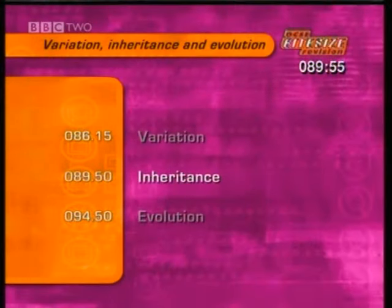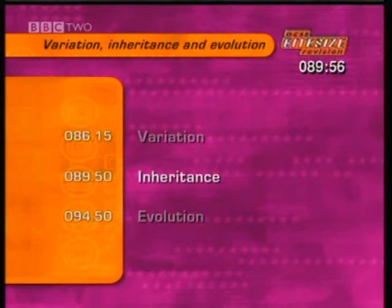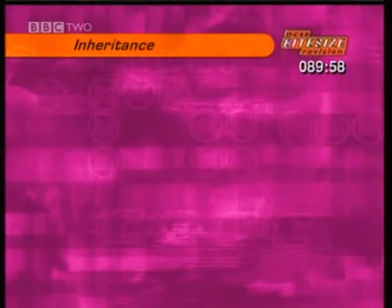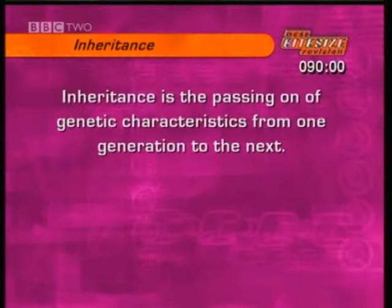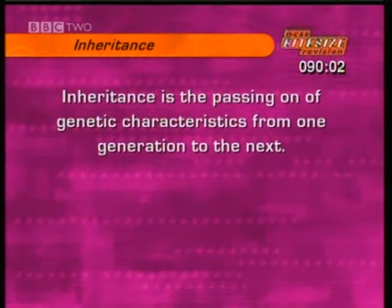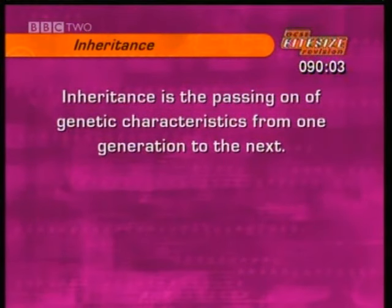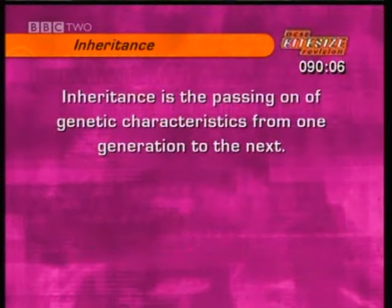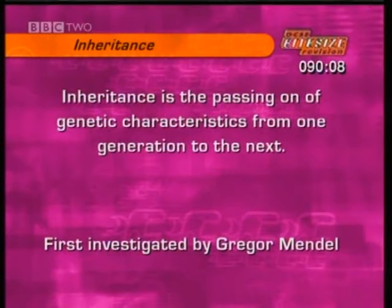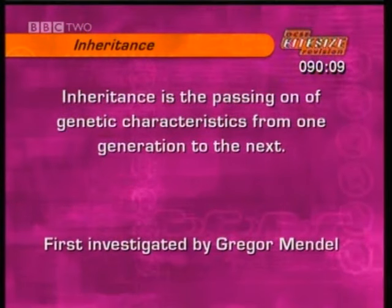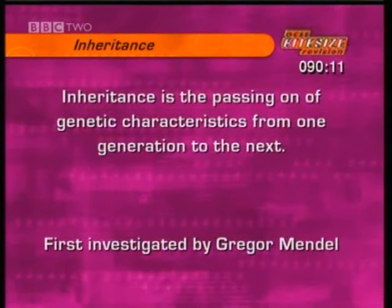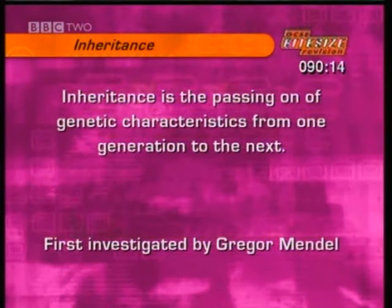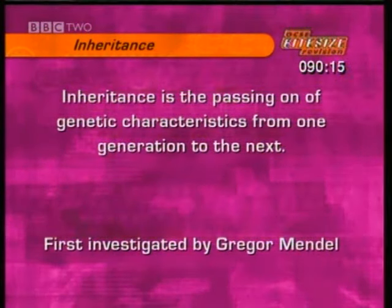Variation leads on to inheritance. Inheritance is the passing on of genetic characteristics from one generation to the next. This was first investigated in the 19th century by Gregor Mendel. As you watch the next clips, make a note of how characteristics are passed on.